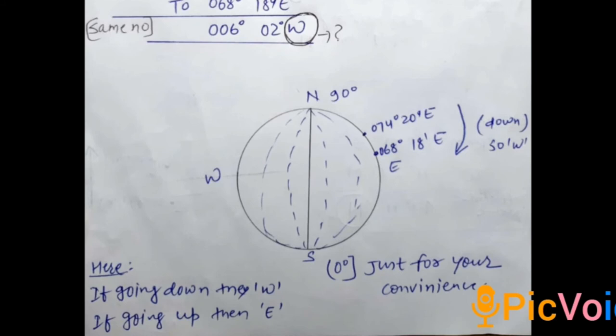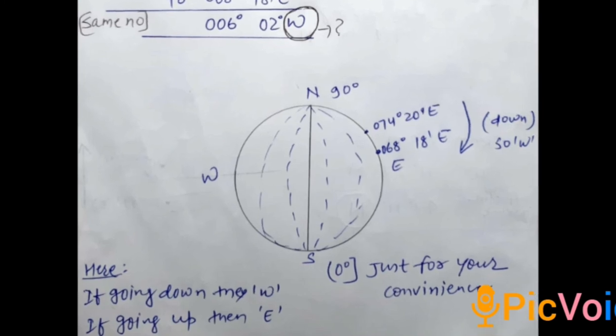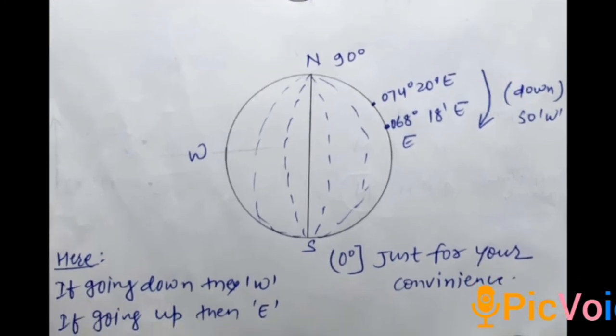074 will be bit upward than 068, so we are heading downward, 074 to 068. As you are seeing in the diagram, we are moving downward, so in case of D-Long, if we are moving downward, then give the direction West.